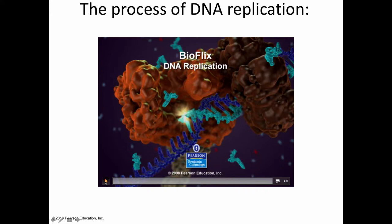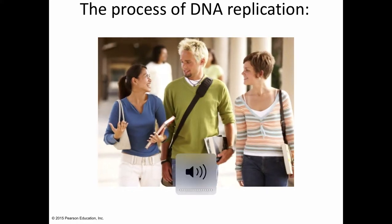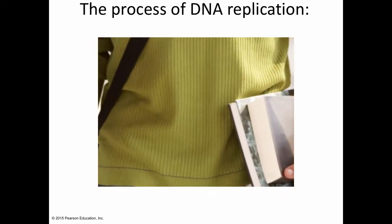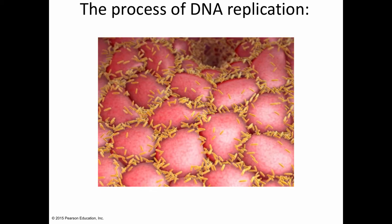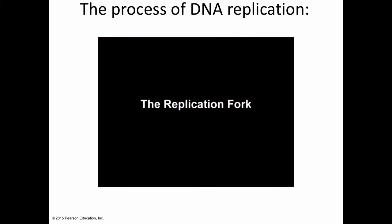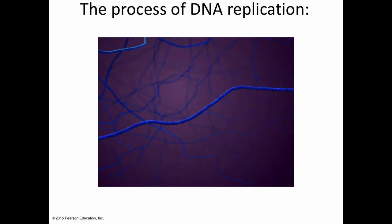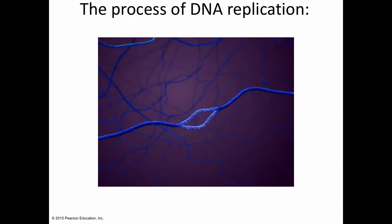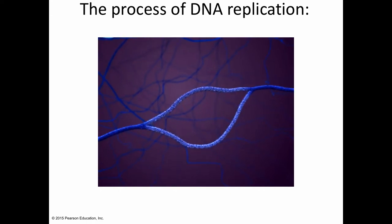Every cell in your body is produced by cell division, and before each cell divides it must copy its genetic material in a process called DNA replication. Understanding of DNA replication comes largely from studies of E. coli bacteria. The two strands of DNA separate, forming a replication bubble. The bubble grows in both directions, forming two replication forks.